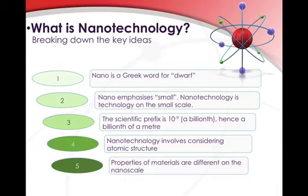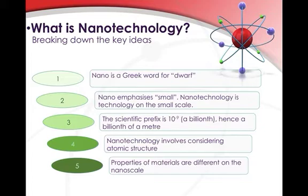The scientific prefix is 10 to the negative 9. We'll look at magnitudes and orders a bit later in the video when we look at scientific notation. A nanometer is 10 to negative 9 meters — that's a billionth of a meter. Nanotechnology also involves considering atomic structure, and the way different elements and different molecules interact on this small scale, because that's very important to function within technology and to get something to work on such a scale.